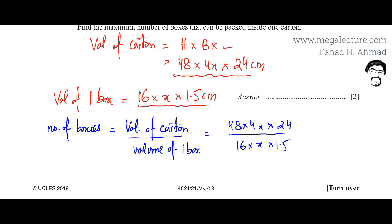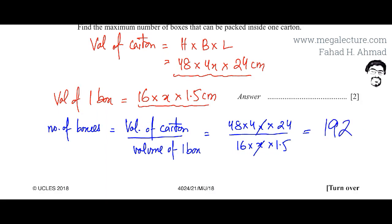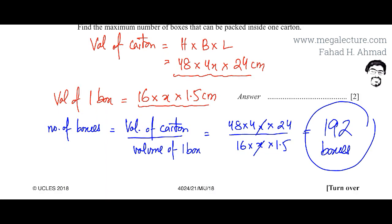So the calculation is 48 times 48 times 24 divided by 16 times X times 1.5. The X values cancel out. Solving on the calculator gives 192. So the maximum number of boxes that can fit inside one carton is 192 boxes.